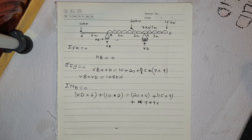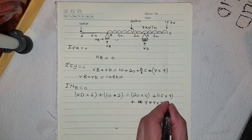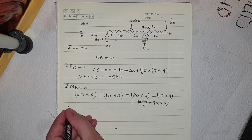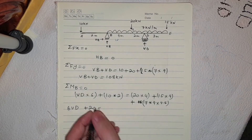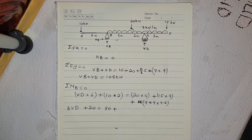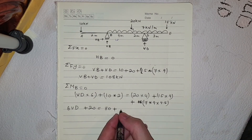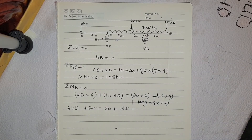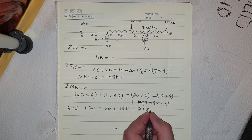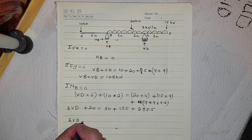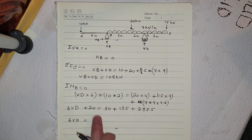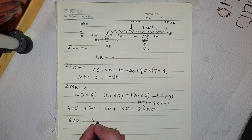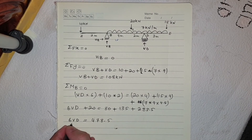So 6Vd plus 20 equals 20 times 4 which is 80, plus 15 times 9 which is 135, plus 7 times 9 times 4.5 which is 283.5. So 6Vd equals 80 plus 135 plus 283.5 minus 20, giving us 478.5. Both sides divide by 6.